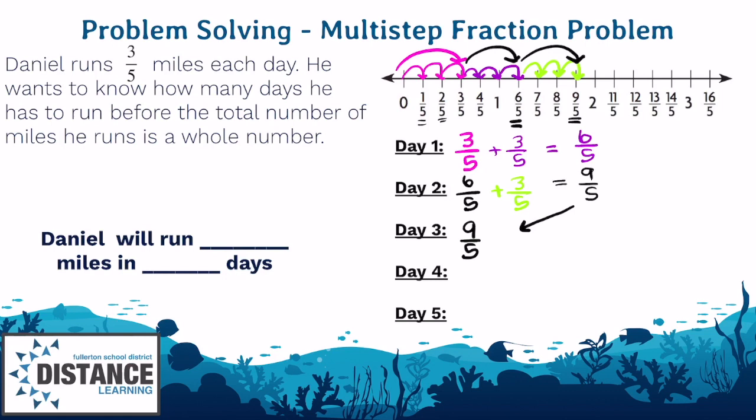So day four. Daniel will take three steps. One, two, three. We land on twelve over five. And twelve over five is not a whole number. So we have to go to day five. And same thing, you can add three over five. Nine over five plus three over five is twelve over five.